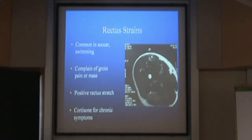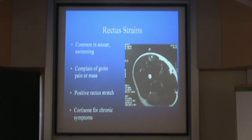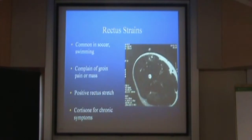Rectus femoris strain is very common, especially because it's a two-joint muscle crossing the hip and knee. Common in soccer and swimming — soccer players going back in extension and kicking through can pop it. With an acute avulsion that pulls down into the thigh, you'll see a mass. When relaxed you won't feel it, but with a straight leg raise you'll see that bulge in the proximal one-third of the thigh — that's a rectus femoris avulsion.